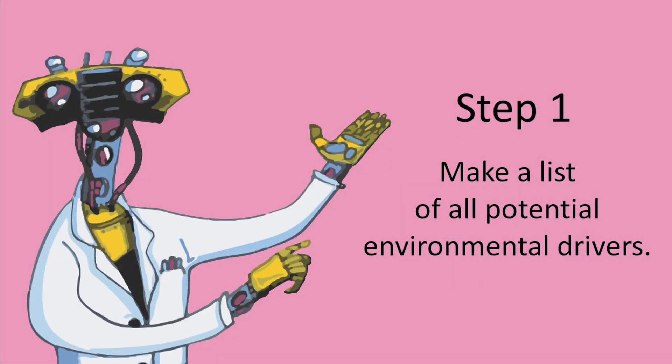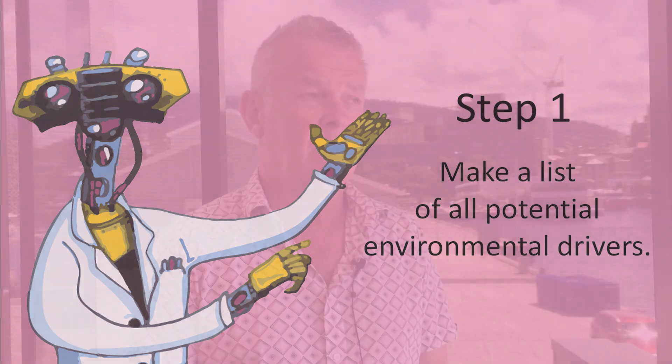The reason it might be off-putting is because there are many different permutations. We have multiple drivers, and by multiple that could be four, five, six, or even ten. Those drivers will vary from region to region and may even vary from month to month. Make a list of all of the potential environmental drivers in your particular location, or with the species or community that you're looking at, or the season.